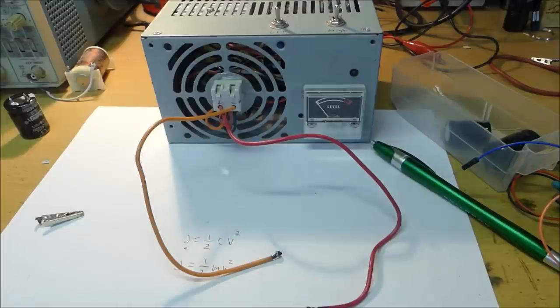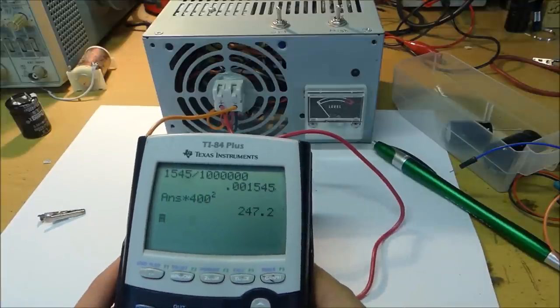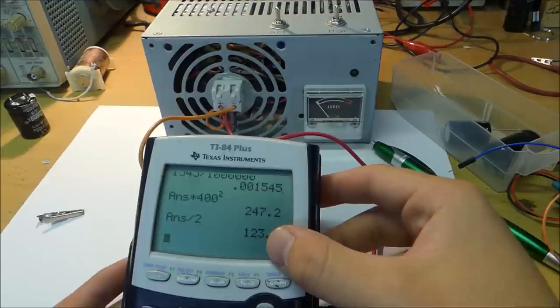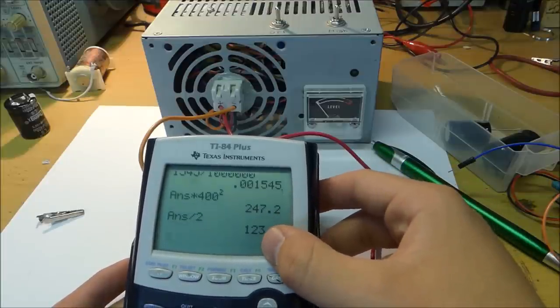So let's do a quick calculation with that. We get an energy stored in this giant capacitor bank at approximately 123.6 joules, which is pretty good.